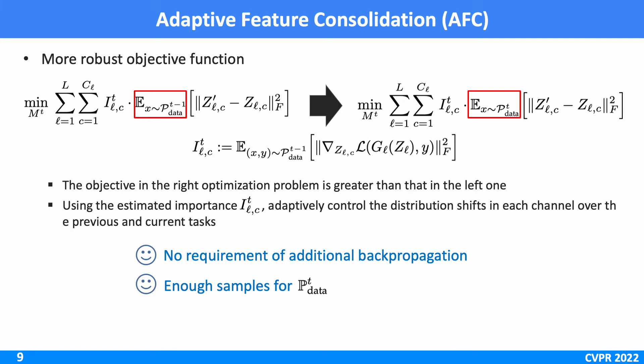This implies that our final optimization procedure can minimize the upper bound of the loss increases over the previous tasks, which eventually alleviates the catastrophic forgetting problem.